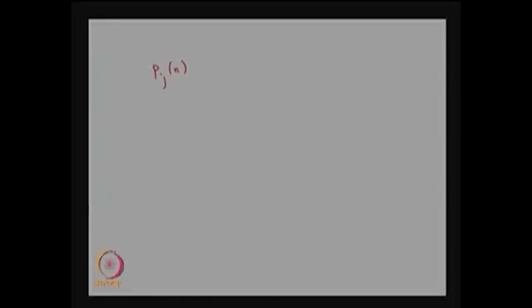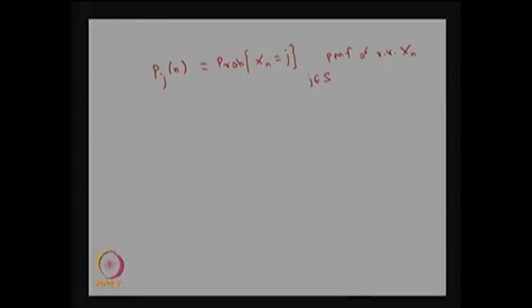I am going to define the probability mass function as p_j(n), which is the probability that Xn takes the value j, where j belongs to the state space S. This is the probability mass function of the random variable Xn.